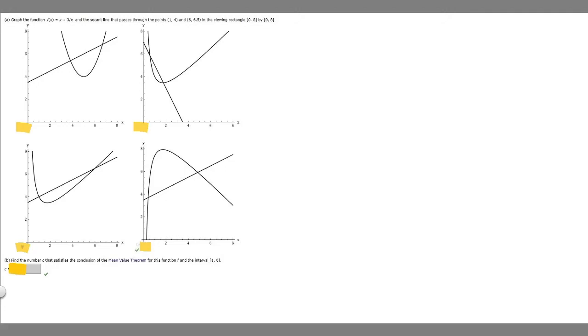In this problem, we're told to graph the function f(x), which equals x plus 3 over x, and the secant line that passes through the points (1, 4) and (6, 6.5) in the viewing rectangle 0 to 8 by 0 to 8. We're basically trying to graph these, and then find the number c that satisfies the conclusion of the mean value theorem.